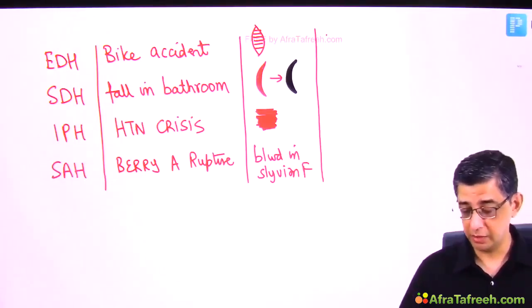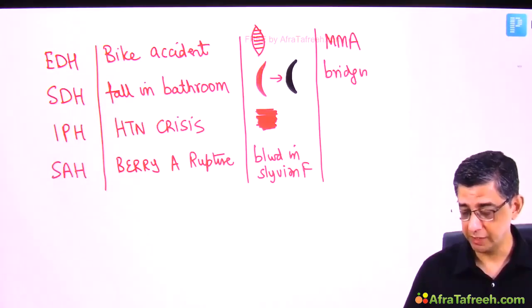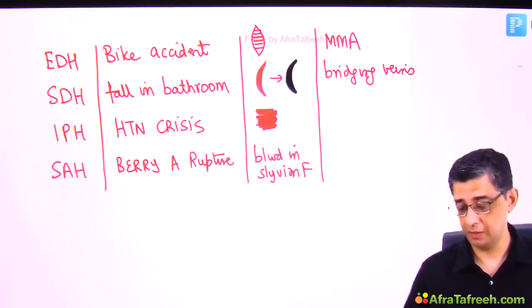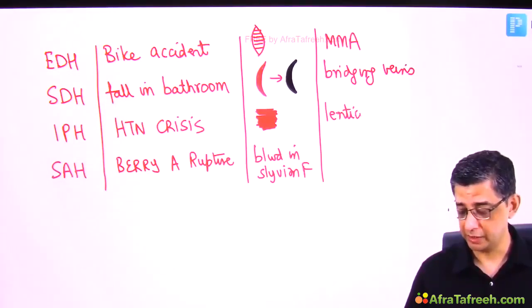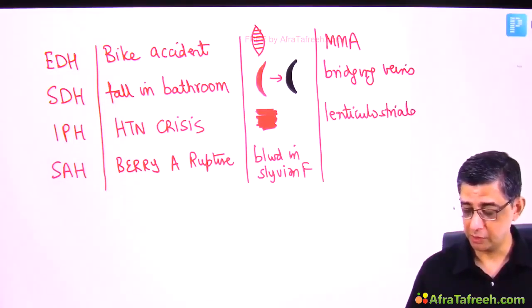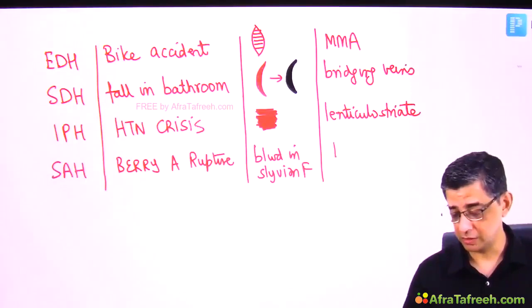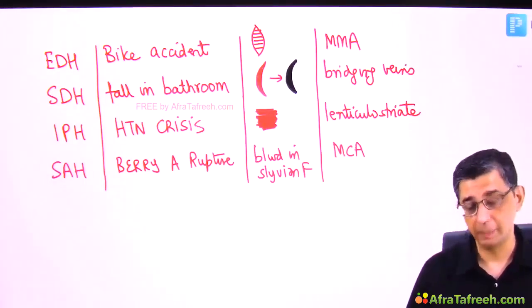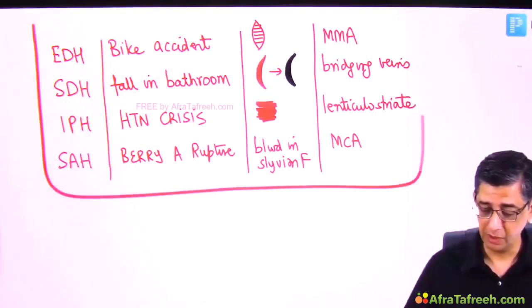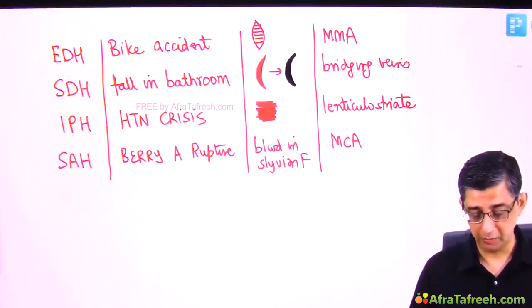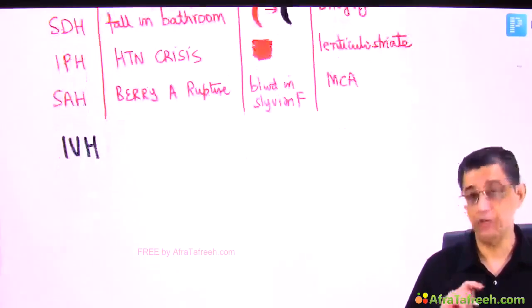Summary of bleeding sources: Extradural — middle meningeal artery; Subdural — bridging veins; Intra-parenchymal — lenticulostriate artery (branch of MCA); Subarachnoid — MCA distribution in most cases. Additionally, intraventricular hemorrhage: in adults it can be an extension of intra-parenchymal hemorrhage; in children it is associated with birth trauma.